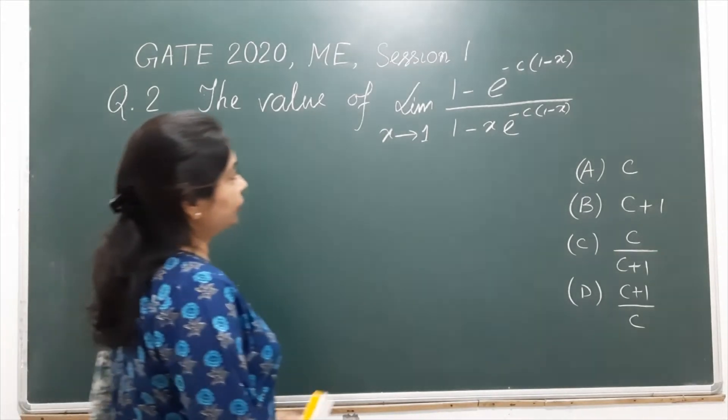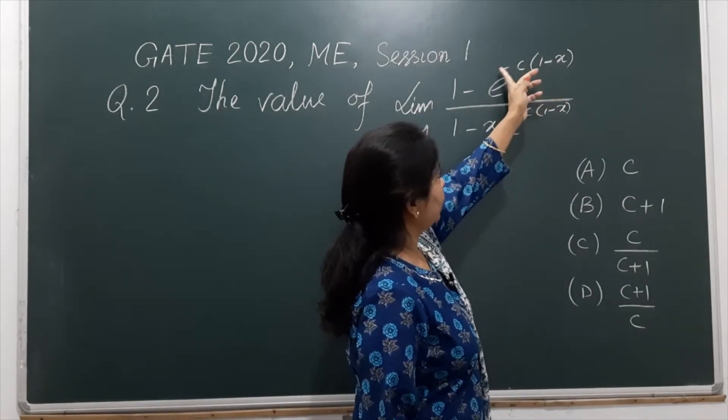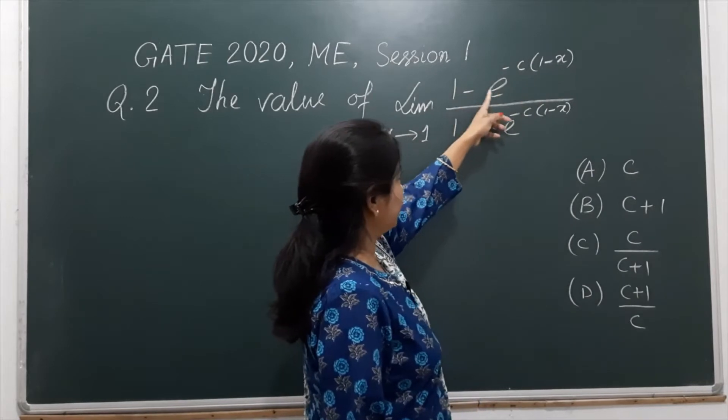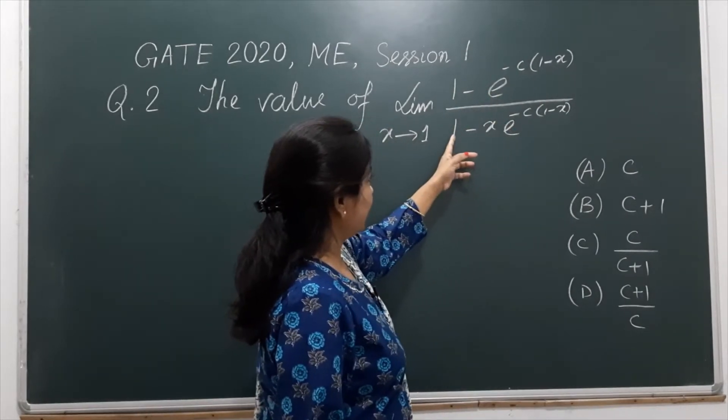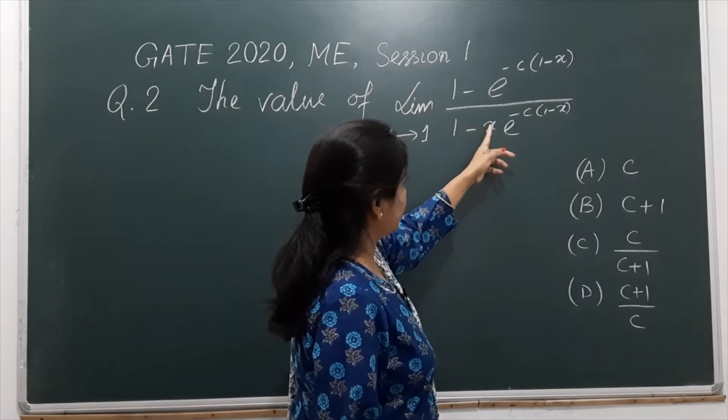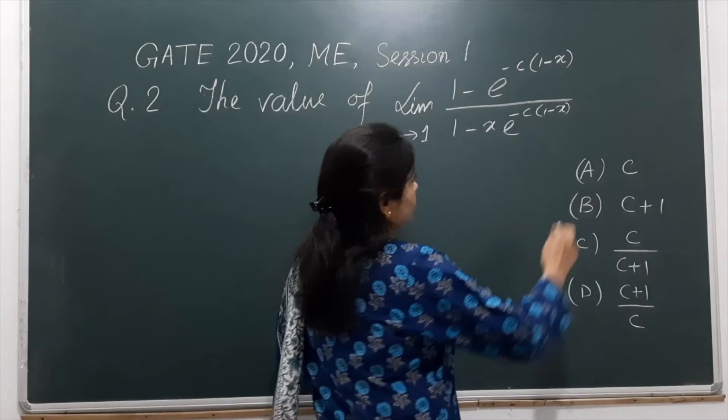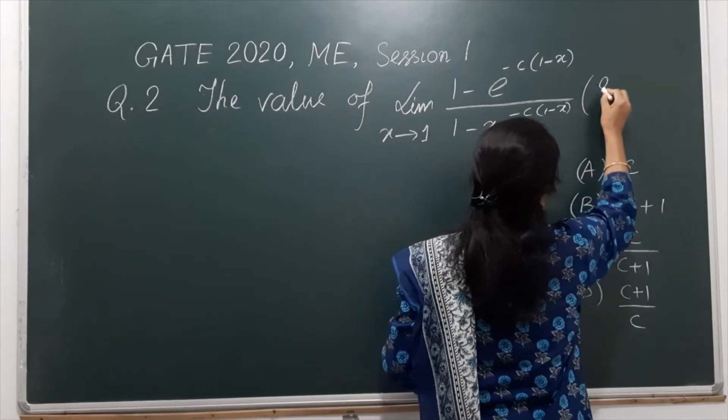Here you see that if you take x equals to 1 then it becomes 0, e power 0 is 1, then 1 minus 1 is 0. And then here also if you take x as 1, then 1 minus 1 is 0, this is already 1, 1 minus 1 is 0. So this is of the form of 0 by 0.